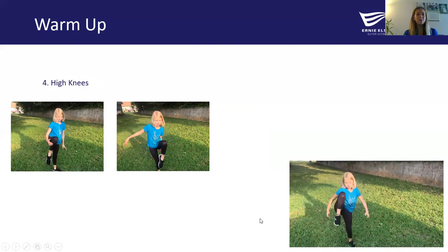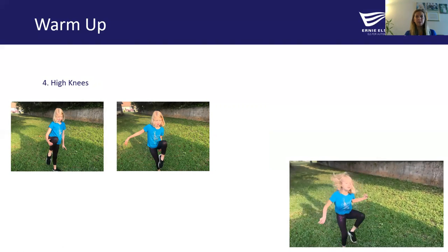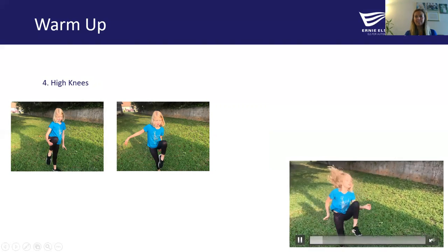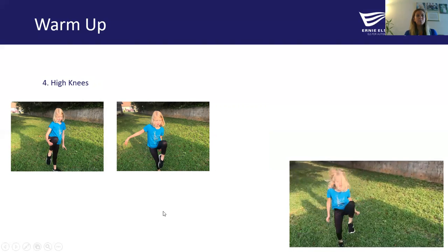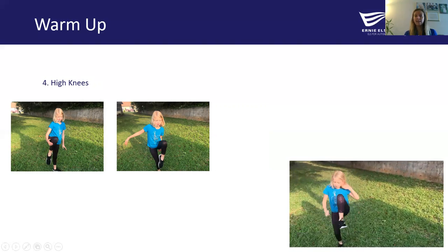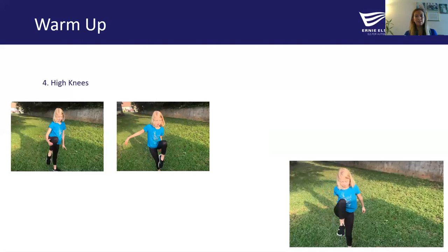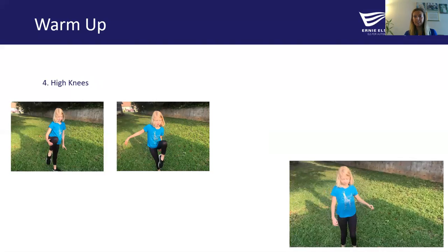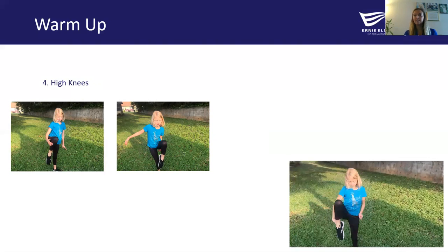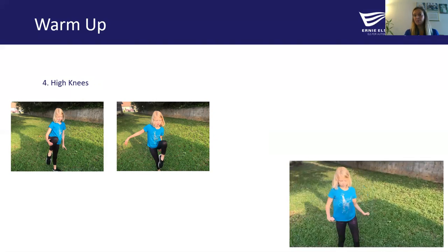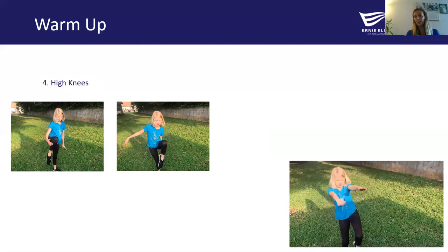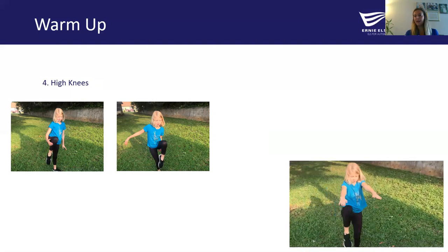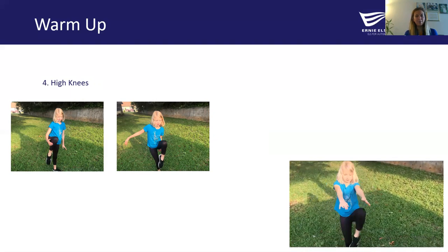Moving on to our lower body warm-up, we've got our high knees. Bringing one knee at a time up towards our chest, making sure that our abs are staying tight, starting off slow. If you want to pick up some speed, you can. You can also put your arms out in front of you to use as a guide for how high you want your knees to go.